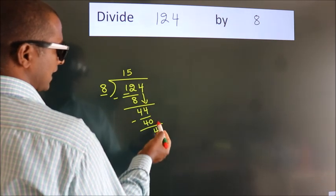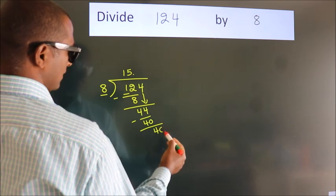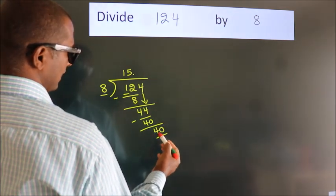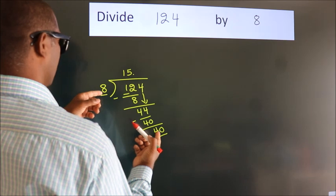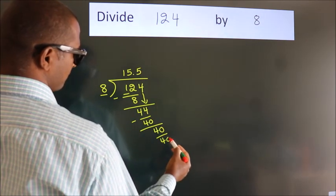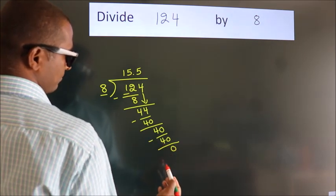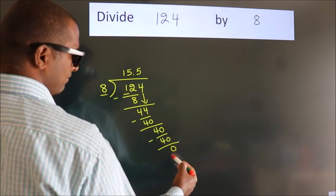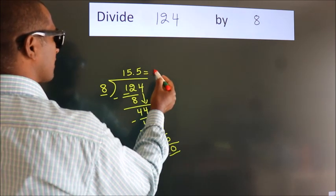No more numbers to bring down, so we put a decimal point and add zero, making 40. 8 times 5 equals 40. We subtract and get zero with remainder zero. This is our quotient: 15.5.